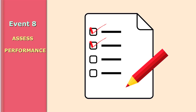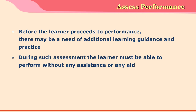The eighth event is assess performance. In this event, the learner must be able to perform without any aid or guidance from the teacher. This event helps absolutely confirm whether the topic has been learned, and also confirms with the teacher the level of understanding the learner has developed. If this stage comes towards the end of a training program, it also helps the teacher qualify the learner with the knowledge they have gained.